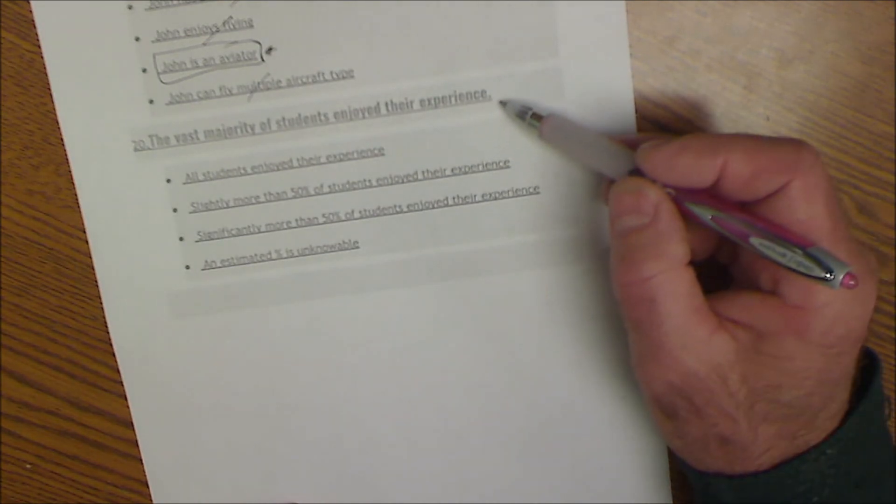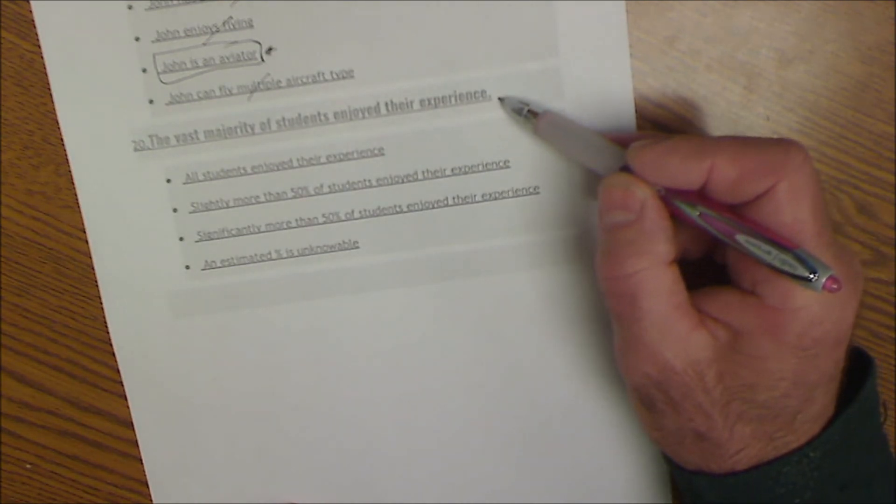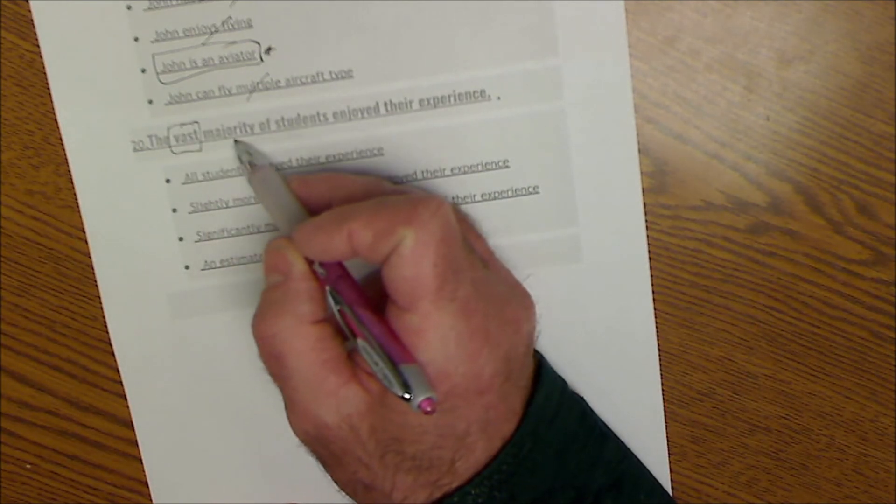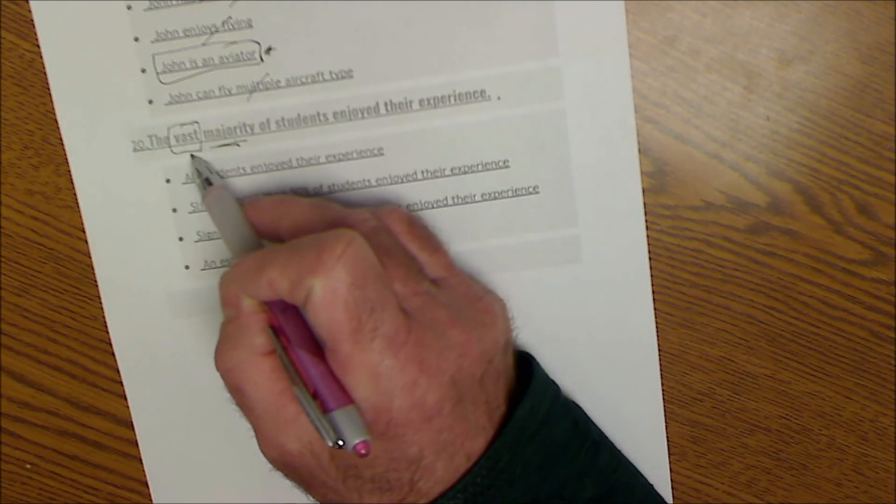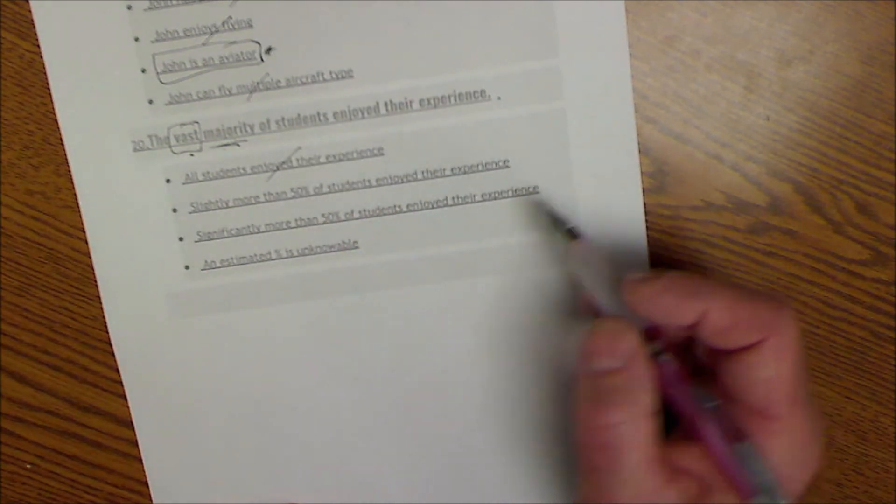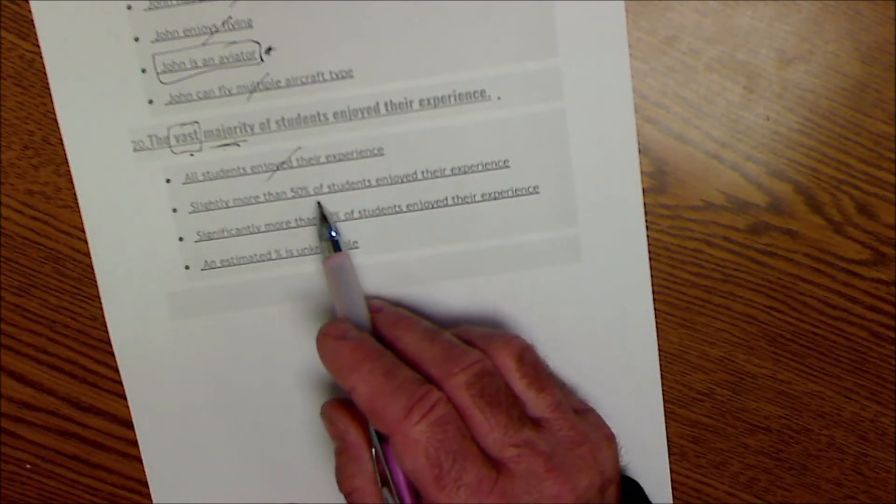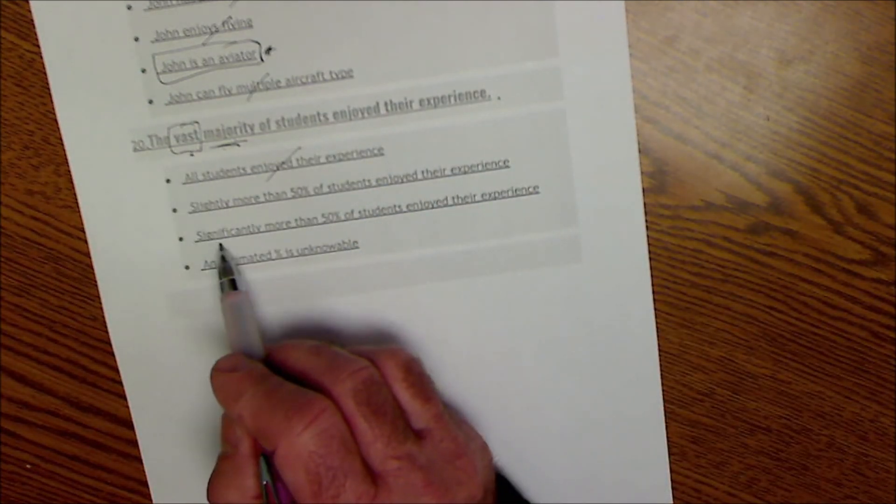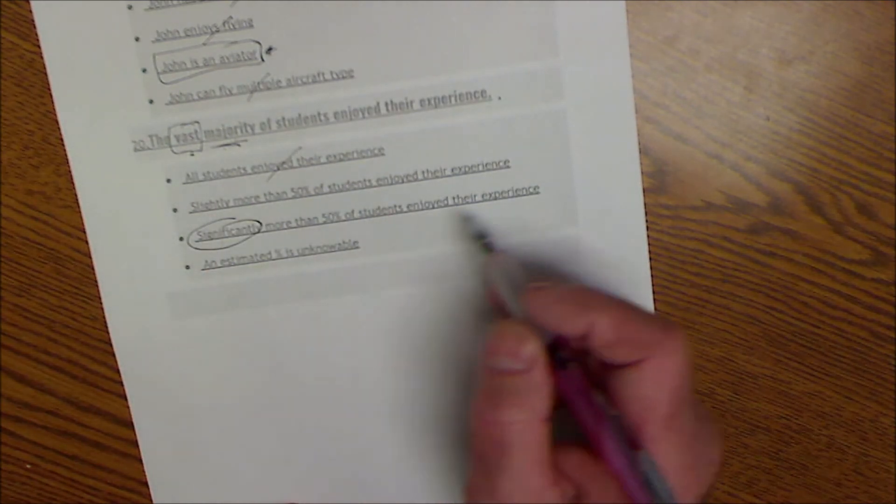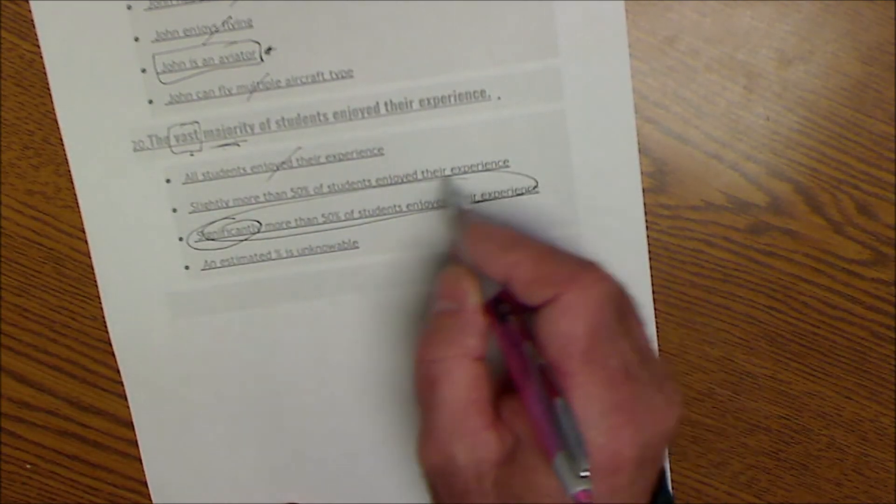And then number 20 here, the vast majority of students enjoyed their experience. So vast, there's a reason why it says vast and majority. So majority means more than 50. Vast means way more than 50. So let's take a look here. That doesn't make sense. Slightly more than 50. Well, it's not slightly. Vast means significantly more. So vast means significantly more than 50. So this is my correct answer here.